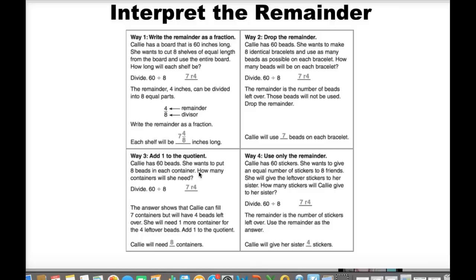Way three is to add one to the quotient. So instead of saying seven remainder four, we just say, okay, well then this counts as another whole and then we would have eight as our quotient. And finally, we might use only the remainder. So the question might be asking how many stickers will Callie give to her sister, that's like the leftovers. So that would be just the remainder.